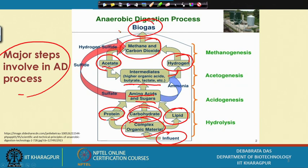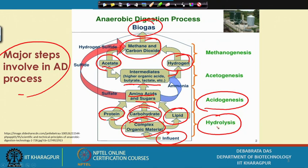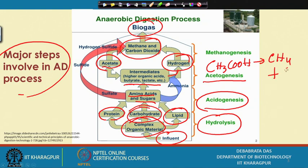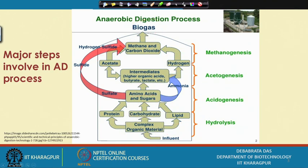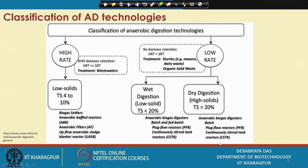Basically, this process involves four major steps. The first is hydrolysis, also called the liquefaction process. The second is acidogenesis, during which different volatile fatty acids form, including butyric acid, acetic acid, lactic acid, fumaric acid, and propionic acid. The third is acetogenesis, where higher acids are converted to acetic acid. Finally, in methanogenesis, acetic acid (CH₃COOH) is converted to methane and carbon dioxide.